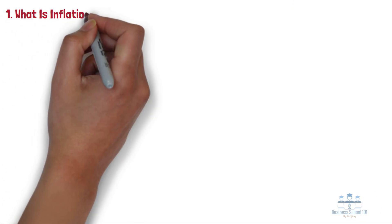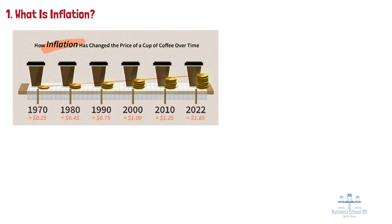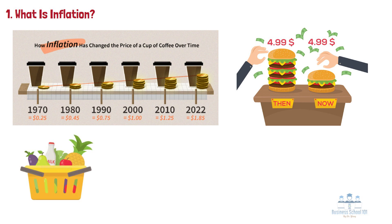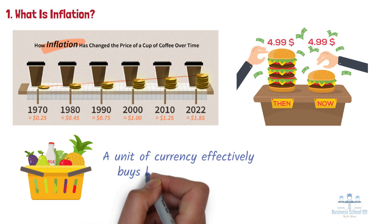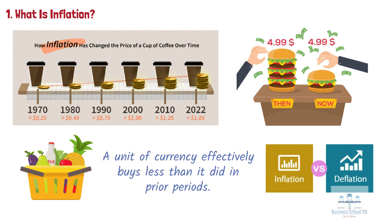Section 1: What is inflation? Inflation is a rise in prices, which can be translated as the decline of purchasing power over time. The rate at which purchasing power drops can be reflected in the average price increase of a basket of selected goods and services over some time. The rise in prices, which is often expressed as a percentage, means that a unit of currency effectively buys less than it did in prior periods. Inflation can be contrasted with deflation, which occurs when prices decline and purchasing power increases.